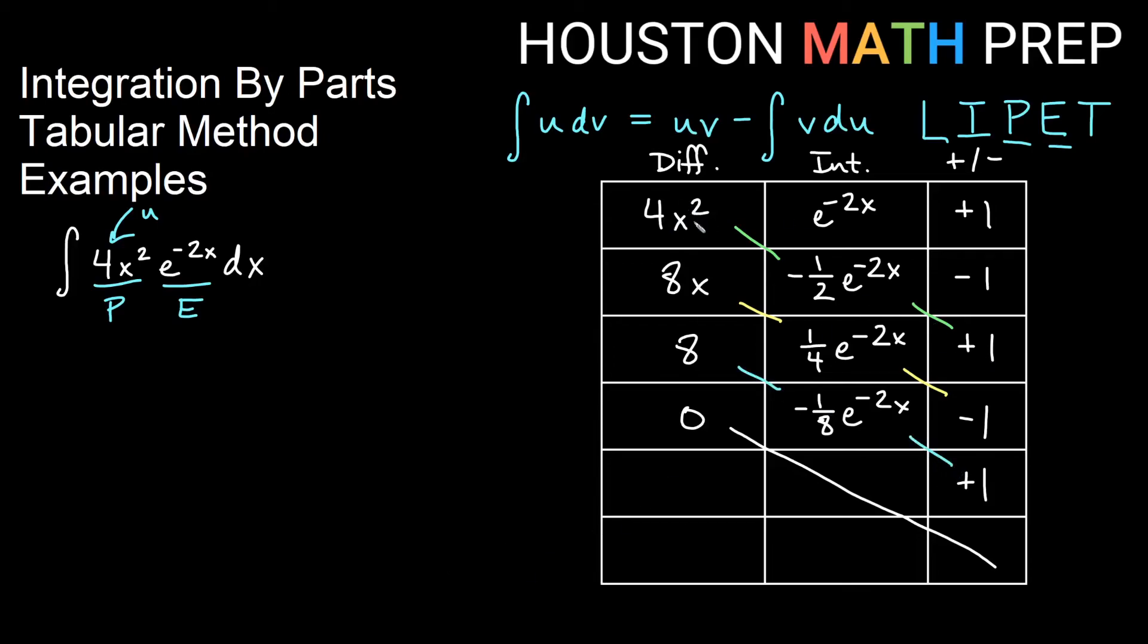So the first diagonal, I have a negative here. So 4 times a half, that would be 2. And then this is a negative. So I would start with negative 2x² e to the negative 2x.